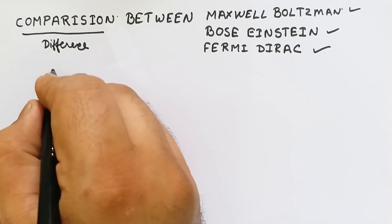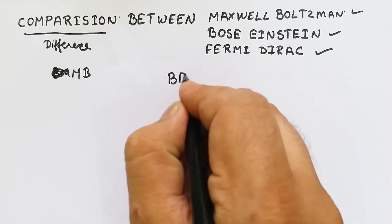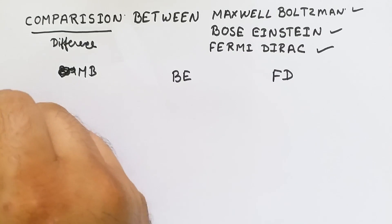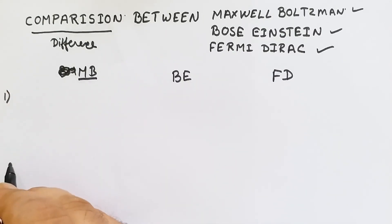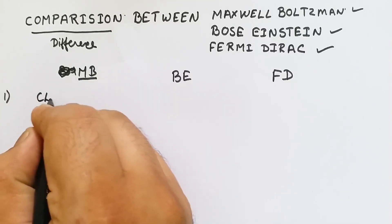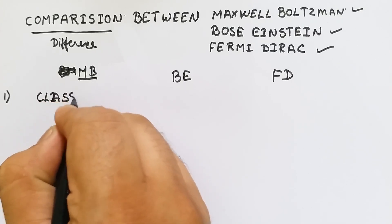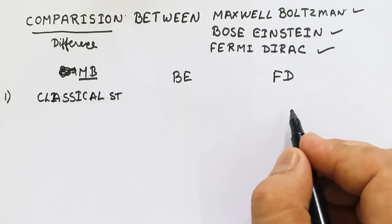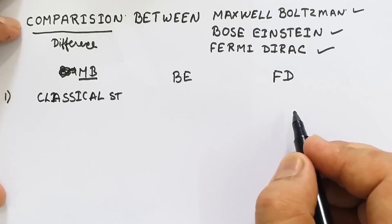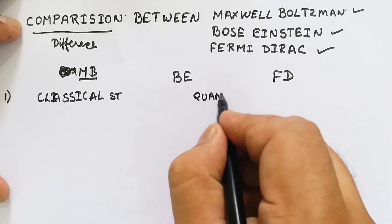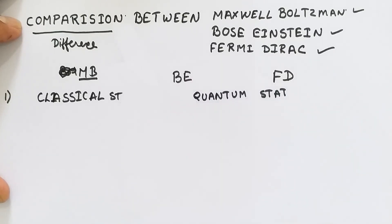The first point of difference: Maxwell-Boltzmann statistics was given before the advancement of quantum mechanics, and hence it is also known as classical statistics, while Bose-Einstein and Fermi-Dirac statistics were given much after the advancement of quantum mechanics. Both of these are combinedly known as quantum statistics.